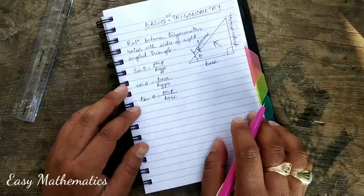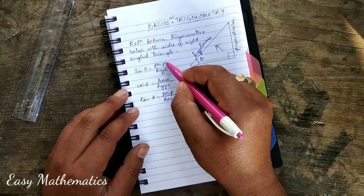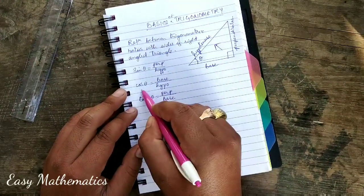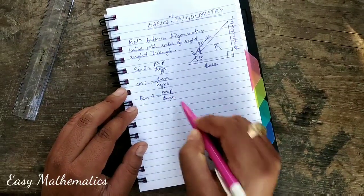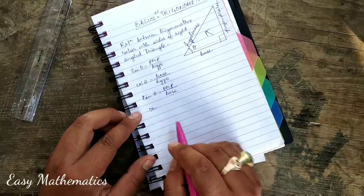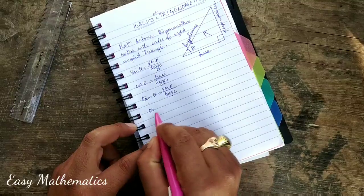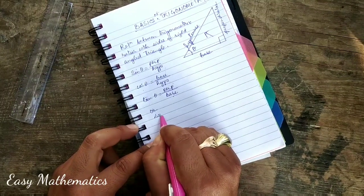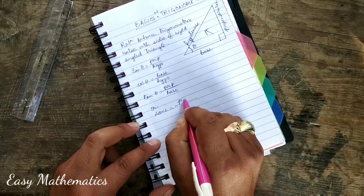In this case, the relation is sin theta perpendicular by hypotenuse, cos theta base by hypotenuse, tan theta perpendicular by base. If you have any questions, please follow me.